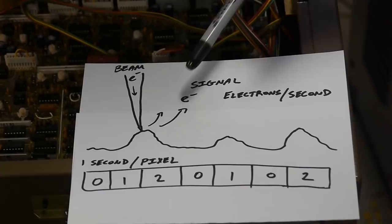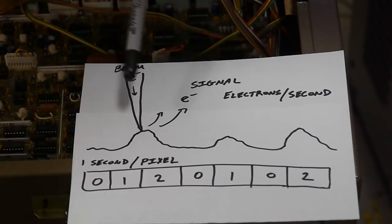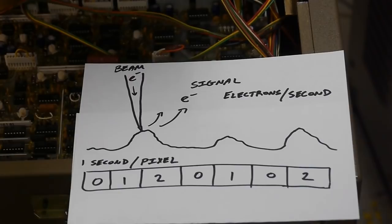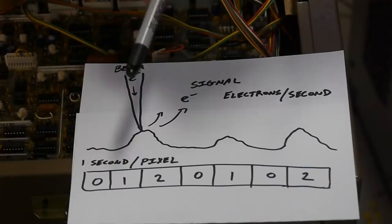Just for argument's sake, let's say that when the beam is over this part of the sample, we're only getting one electron per second. And over here we're getting two electrons per second. Now we want to amplify this signal into something we can actually see in an image. However, no matter how good our amplifier is, this is going to make a pretty terrible looking image because there's so few gradations.